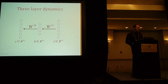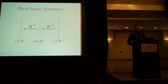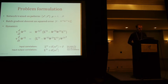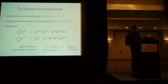Let's start with three-layer dynamics. I have the simplest deep network you could think of — just two weight matrices, fully linear, so the network just multiplies input by those two weight matrices. We're going to train it on a set of patterns: x's are inputs, y's are outputs. We're doing batch gradient descent on squared error — the simplest setup you can come up with.